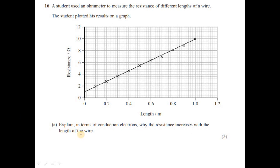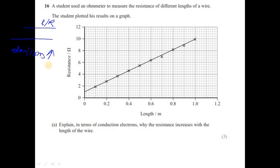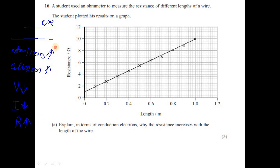If you have a given length L with some specific resistance R, increasing the length means the number of atoms inside the conductor — or the number of lattice ions — increases. That means collisions also increase. If collisions increase, drift velocity decreases, current decreases, and so resistance increases. That's how you can see the effect of length on resistance.